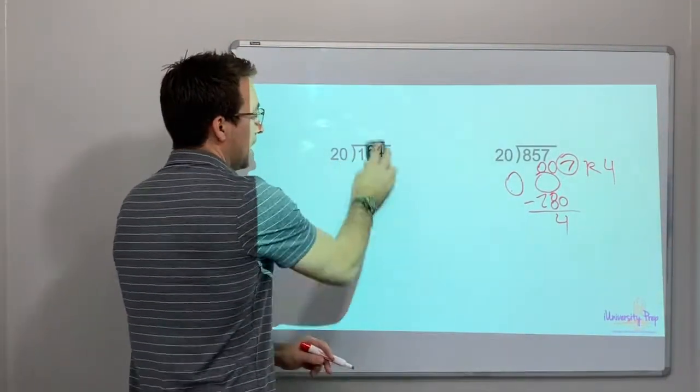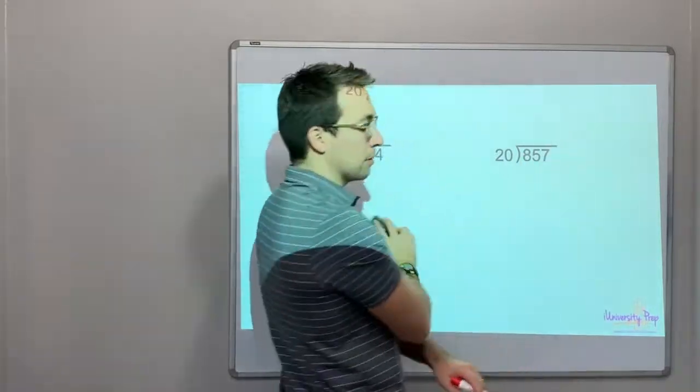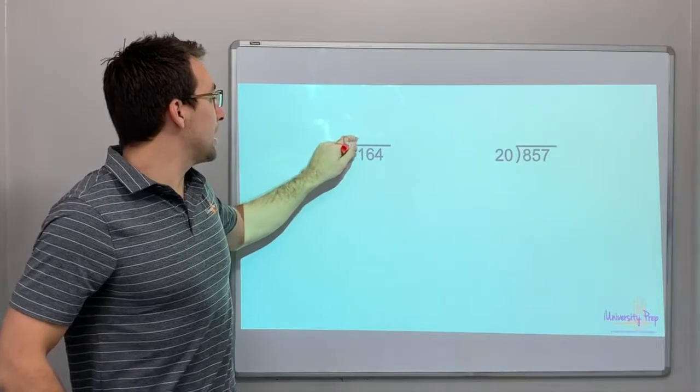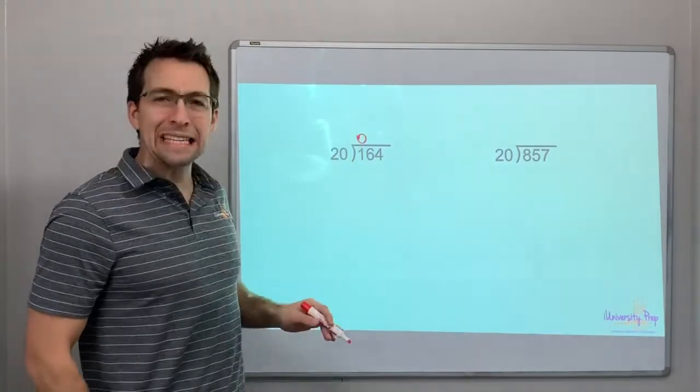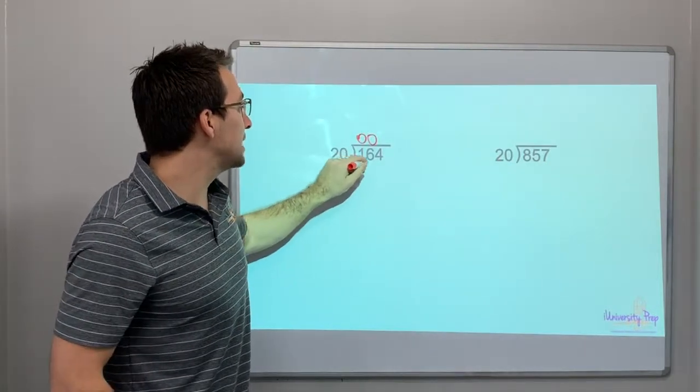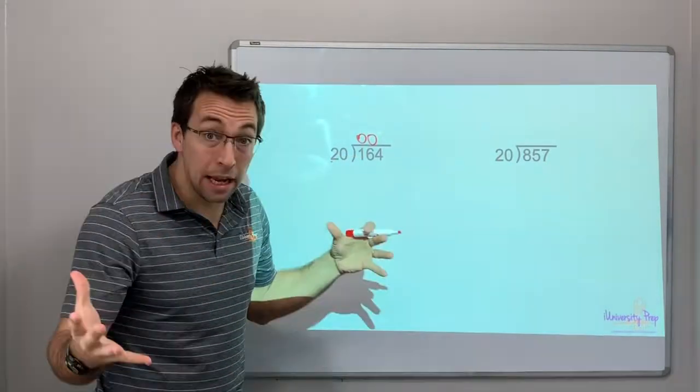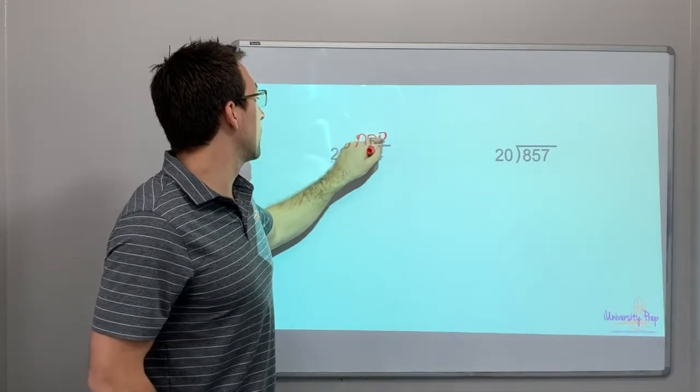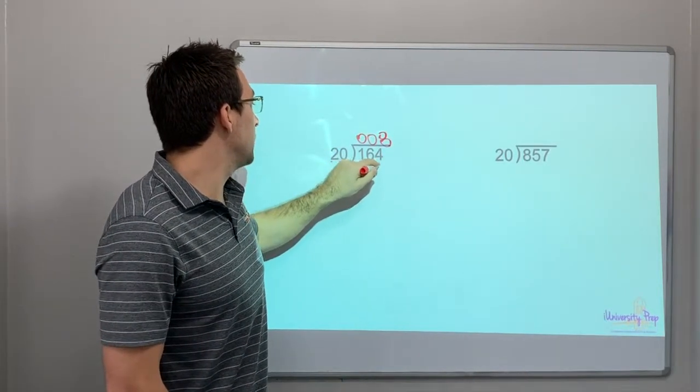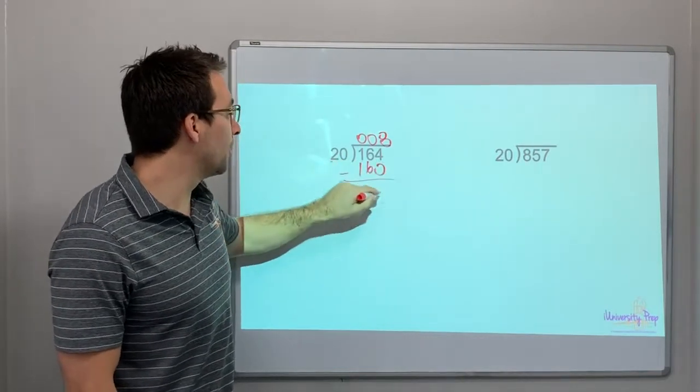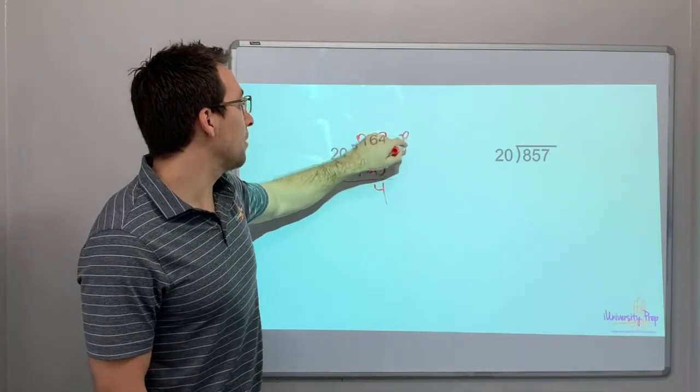Next question. In this video, we have 8 examples, so we'll be too long here. 20 goes into 1, 0 times. 20 goes into 16, 0 times. But let's look at our compatible numbers. 2 and 16. 8. 20 times 8, let's figure that out. 8 times 20 would be 0. 8 times 2 is 16. Whoa! 8 remainder of 4.